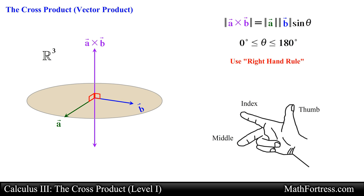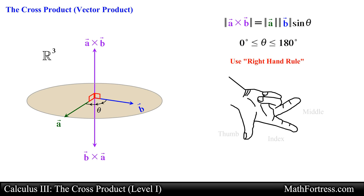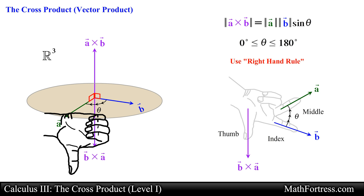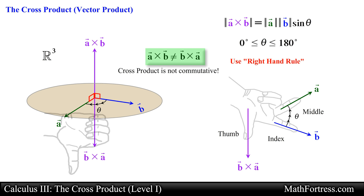If we are asked to find the cross product between vector b and vector a, we obtain a totally different vector. In this case we point our fingers in the direction of vector b and curl them towards vector a, again choosing the smaller of the two angles. You will discover that your thumb now points in the opposite direction. This tells us that the cross product is not commutative: vector a crossed with vector b is not the same as vector b crossed with vector a. In fact they have equal lengths but opposite directions.